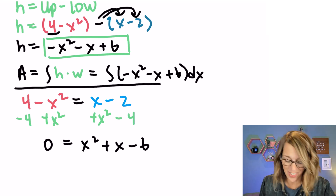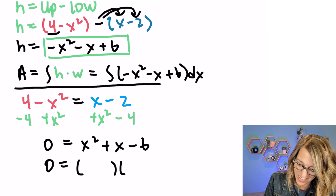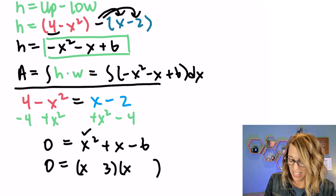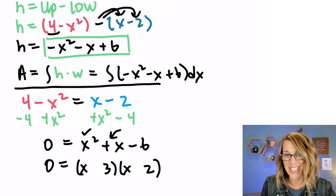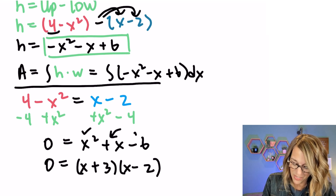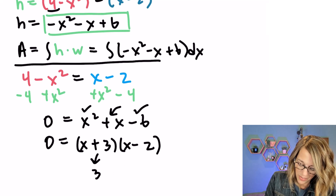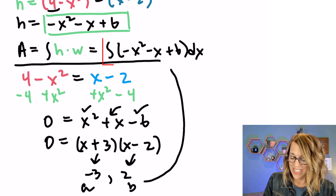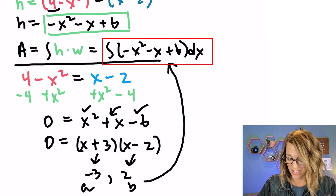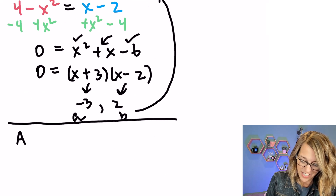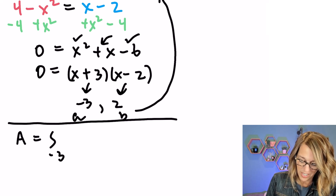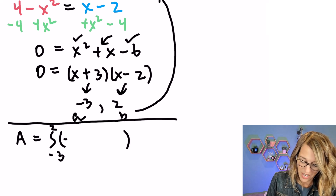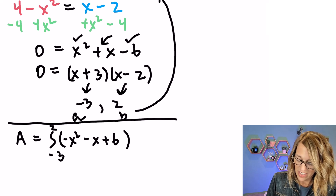This one factors — I can use a 2 and a 3. So 0 equals (x + 3)(x minus 2): x times x gives x squared, and to multiply to negative 6 I use a positive 3 and a negative 2, which gives the middle x term as positive. That gives me x equals negative 3 and x equals 2 as my a and b. Putting everything together, my area is equal to the integral from negative 3 to 2 of (negative x squared minus x plus 6) dx.